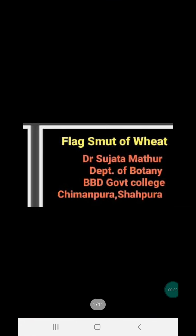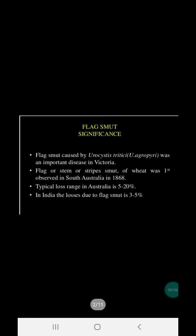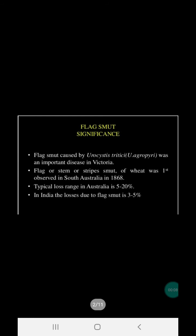Good morning. Today our topic is Flag Smut of Wheat. Flag smut of wheat is caused by Urocystis tritici. It was an important disease in Victoria. Flag smut or striped smut of wheat was first observed in South Australia in 1868.